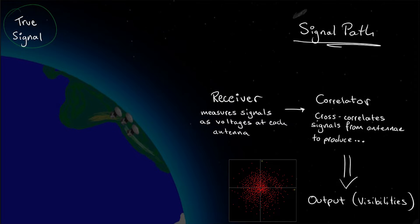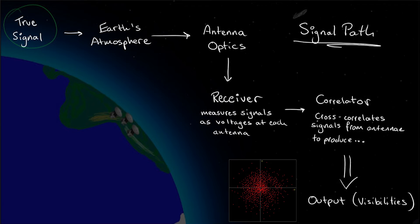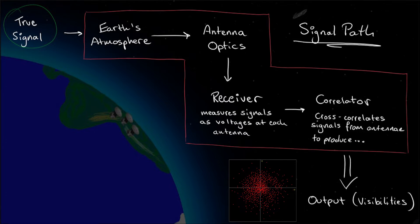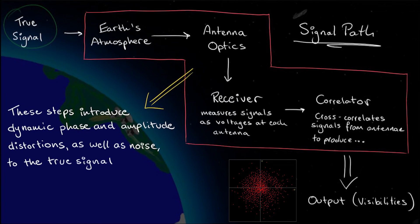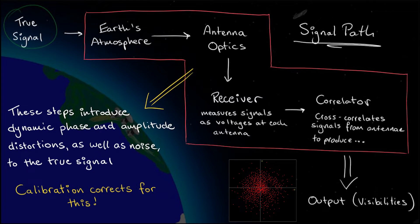As a signal travels from an astronomical source to the correlator, it passes through the Earth's atmosphere, through the antenna optics, and finally into the receiver, where it is detected and converted to a voltage. Each of these steps modifies and distorts the incoming radiation in different ways before it reaches the receiver. These distortions can vary as a function of time and frequency, and even from antenna to antenna. Calibration is the process of correcting for these distortions, so that we can convert the output from our detectors into physical units that we use to do science. This is no different from the calibration we need to do when observing at optical or other wavelengths.